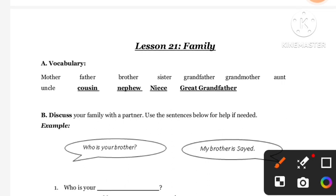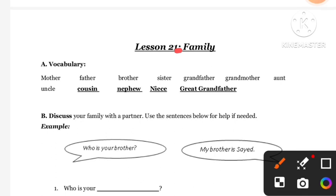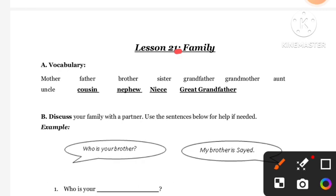The first objective is that students will learn family vocabulary like nephew and cousin — they will get to know some new words in today's lesson. There is also one more objective which I will talk about later.